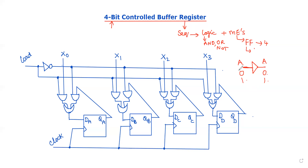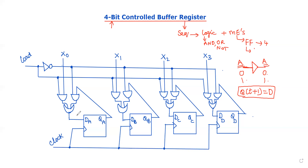If we have a buffer, the input and output are the same. So only the D flip-flop is the possibility. The D flip-flop's characteristic equation is Q(T+1) = D. Whatever D is, that is the next state value — we get the output without any change, depending on the input value. That is why we prefer D flip-flops.